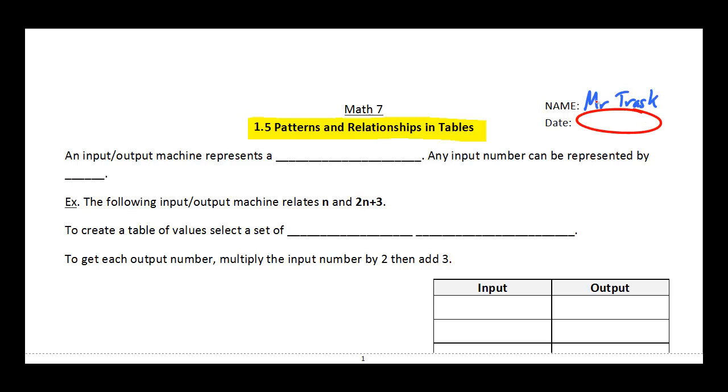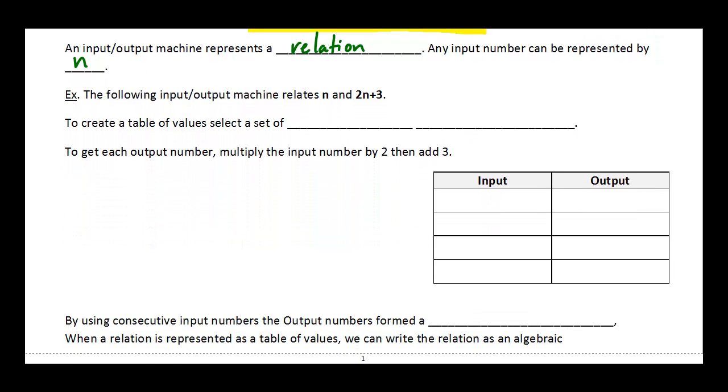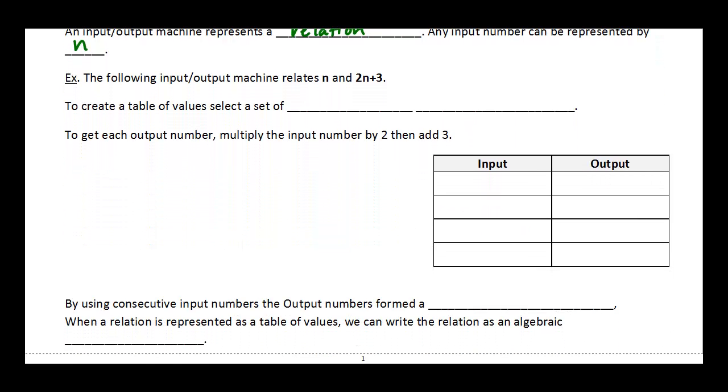An input/output machine basically just represents a relation. Any input number, you can choose any input number, and out of that comes a certain output. We'll just use n to represent that. So imagine an input/output machine that relates n to 2n plus 3. To create what we call a table of values, and this is a table of values right here.